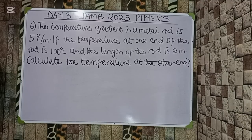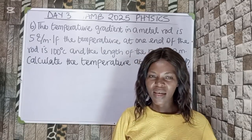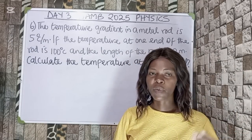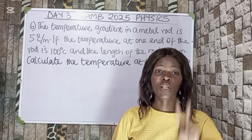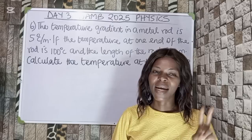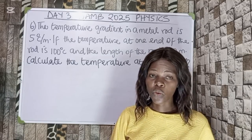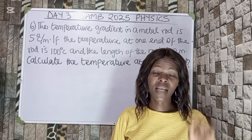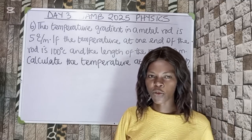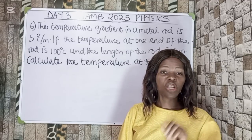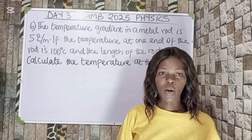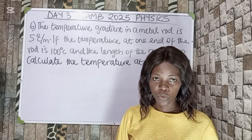Question 6. The temperature gradient in a metal rod is 5°C per meter. If the temperature at one end of the rod is 100°C and the length of the rod is 2 meters, calculate the temperature at the other end. I am repeating this question because it has been repeated in day 2 and day 3. The formula is: temperature gradient = change in temperature over length.